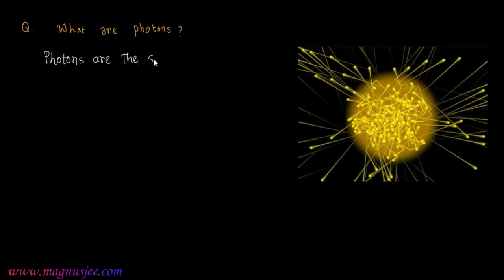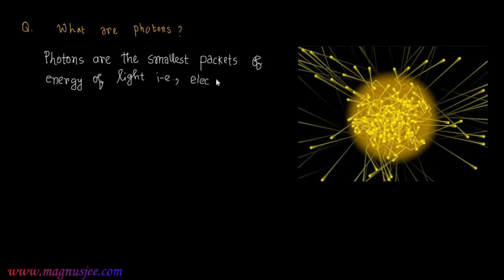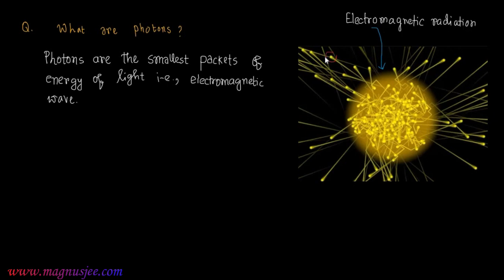What are photons? Photons are the smallest packets of energy of light — that is, the smallest packets of electromagnetic waves. In the diagram, this is an electromagnetic radiation, and the packets of energy of electromagnetic radiation are the photons.